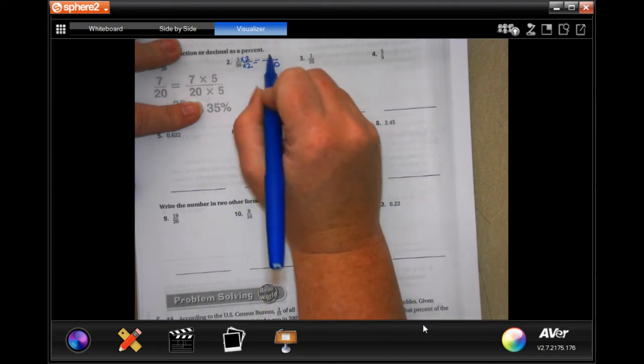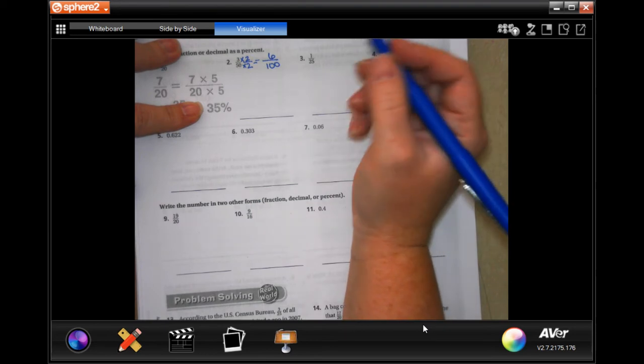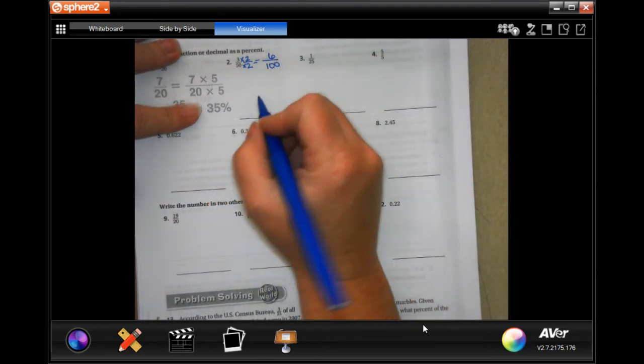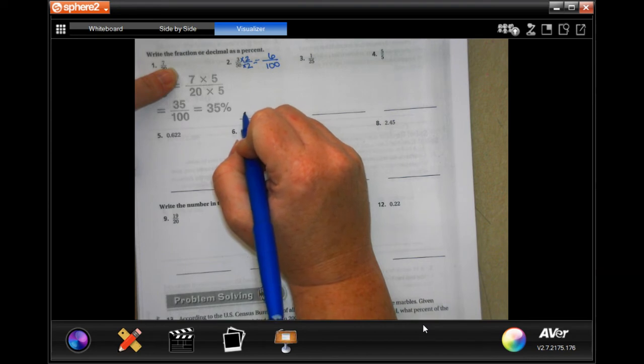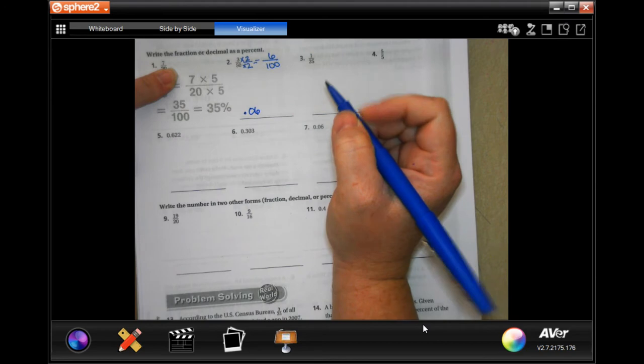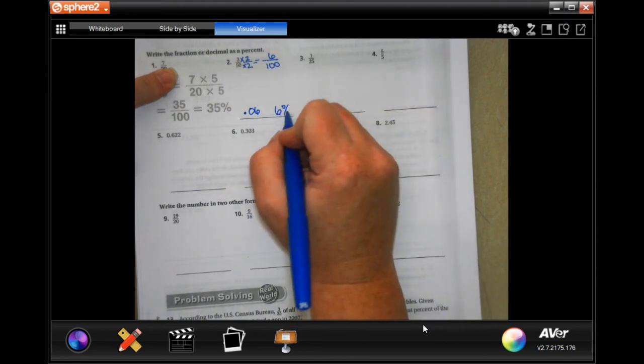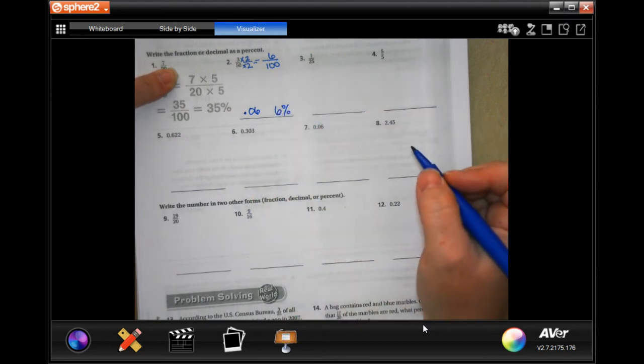Now, 3 times 2 is 6. If it's 6 over 100, then it's going to be 0.06, because that ends in the 100th spot, or it's going to be 6%.